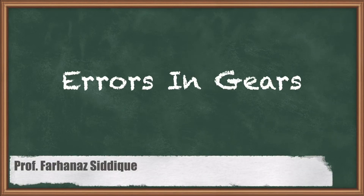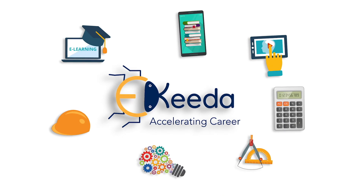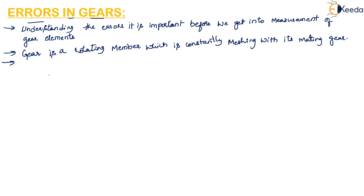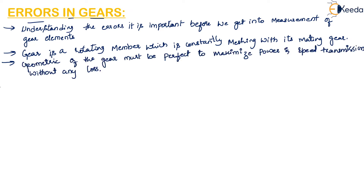Today's topic is errors in gears. Before we get into the measurement of different elements of gears, we need to understand the different errors caused while manufacturing them. A gear is a rotating member that constantly meshes with its mating gear, with a driving and driven part. The gear must have a perfect geometry to maximize the transmission of power and speed and to reduce loss. There are seven major types of errors which occur in a gear.